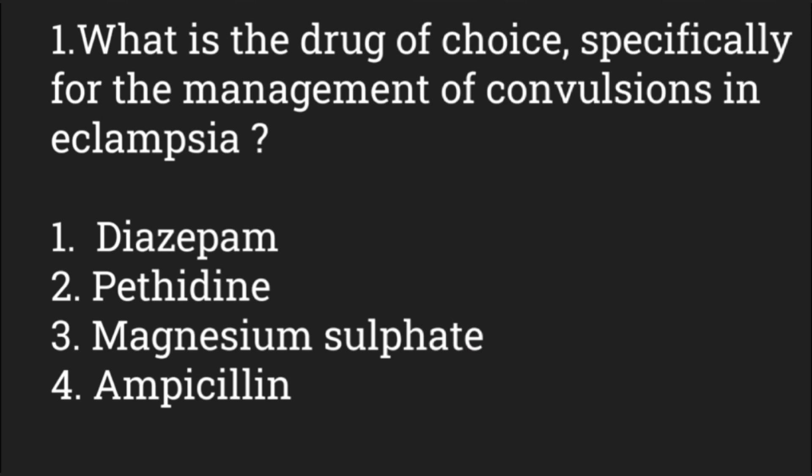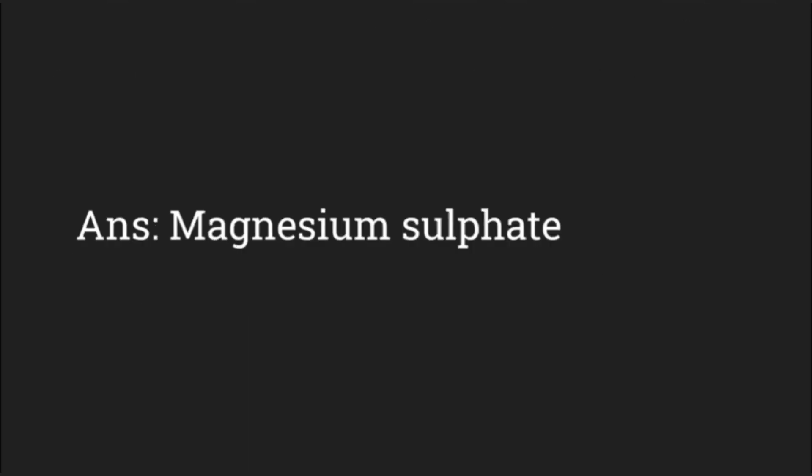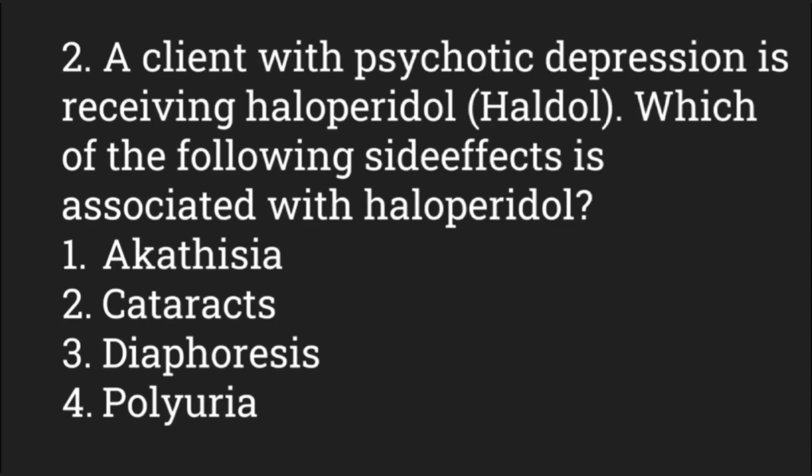What is the drug of choice specifically for the management of convulsions in eclampsia? In eclampsia — that is, when hypertension occurs during pregnancy it is called preeclampsia, and when hypertension is severe with convulsions it is called eclampsia. The drug of choice among diazepam, pethidine, magnesium sulfate, and ampicillin is magnesium sulfate.